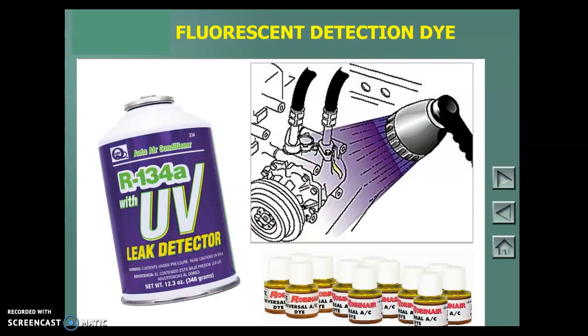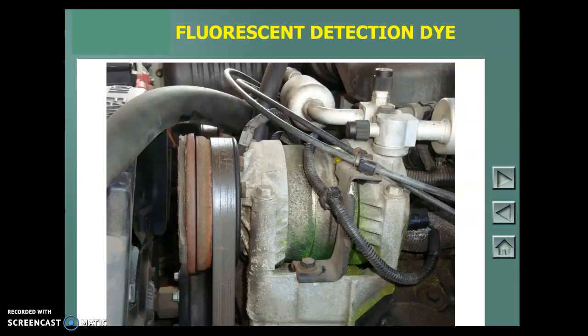We also have fluorescent detection, where you fill a dye with oil into the system. So, where there's a leak and you use a black light, and that lights up, you can see where that leak is. And then you can fix it, and then recharge it, and move on. So, here's a picture of what it looks like without a black light. Can you imagine what this one would look like with a black light? Yeah, this one would jump right out at you. Obviously, that compressor is bad.